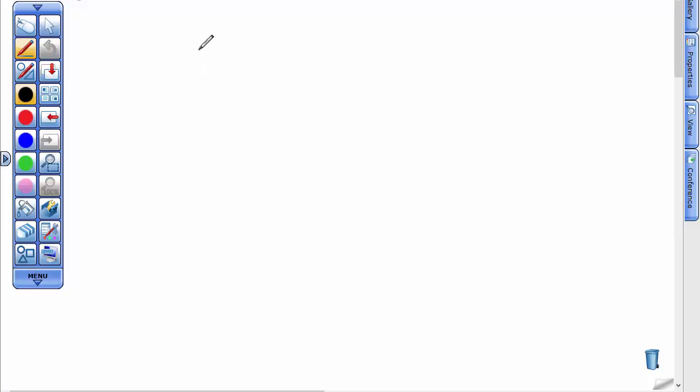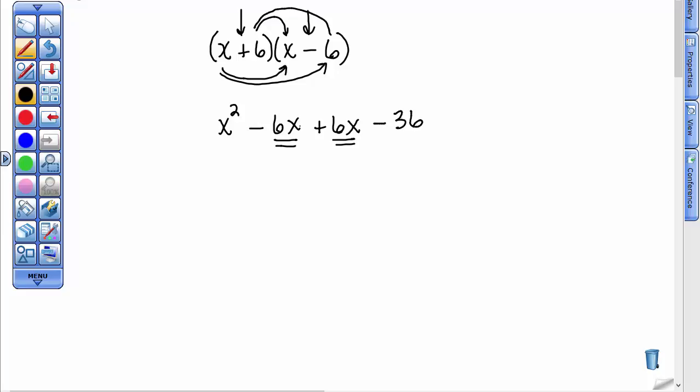The next type of problem in these special products is called the sum and difference of like terms. It's two binomials that look alike, but one has a plus sign and one has a minus sign. When you FOIL these, you get a special situation. Let's go ahead and do it: (x+6)(x-6). x times x is x². These outer terms: x times -6 is -6x. These inside terms will always be opposite of the -6x. 6 times x here is +6x. When you FOIL this kind of problem, these two will always disappear.